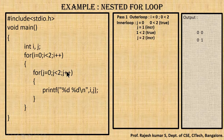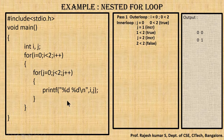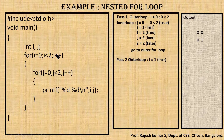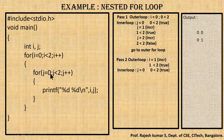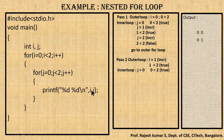j increments again — j becomes two. Two is less than two — false. Since the inner for loop condition is false, we check for any statement belonging to the outer for loop. There are no additional statements, so we increment the outer for loop — i becomes one. We check: one is less than two — true. We enter the outer for loop again. The inner for loop reinitializes j to zero. Zero less than two — true. We execute the print statement: i is now one and j is zero, so '1 0' is printed.